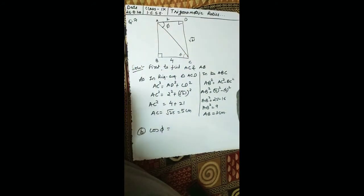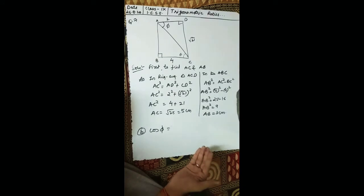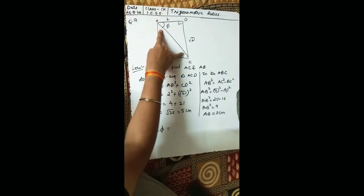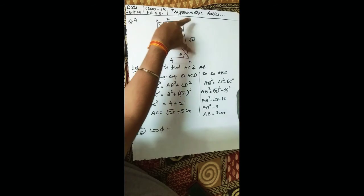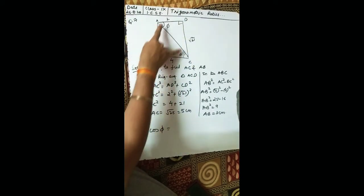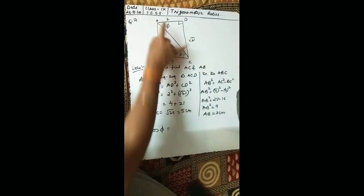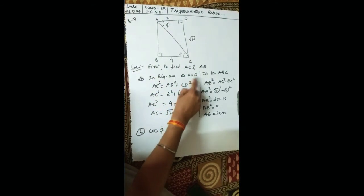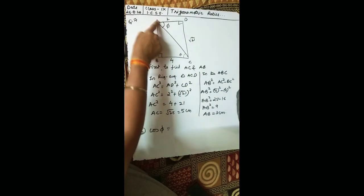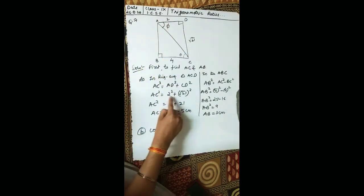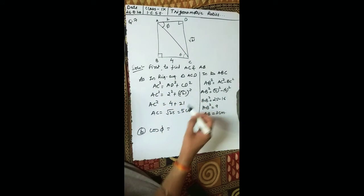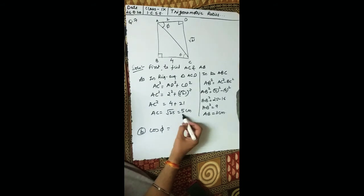In right triangle ADC, we have the base and perpendicular but not the hypotenuse. Using PGT: AC squared equals AD squared plus CD squared. AD is 2, so AD squared is 4. CD is root 21, so CD squared is 21. Therefore AC squared equals 4 plus 21 equals 25, so AC equals 5 centimeters.